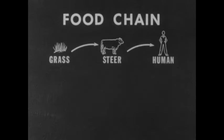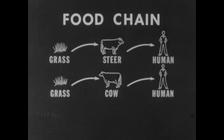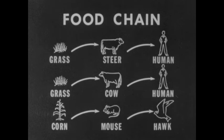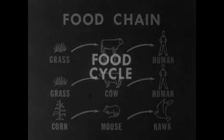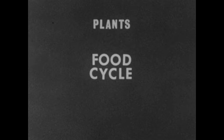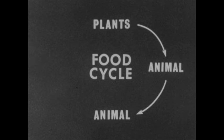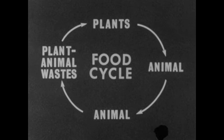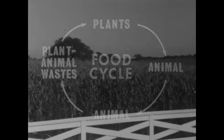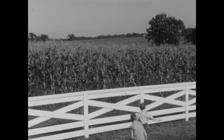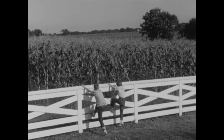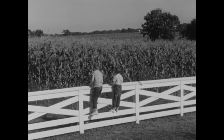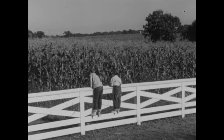We have seen that green plants are the beginning of any number of food chains. And we have also seen that these chains produce wastes which in turn continue the food cycle — the unending pattern of life, growth, and decay that makes possible the maintenance of all forms of life in the world in which we live.